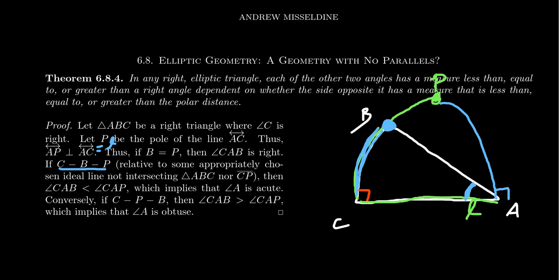The other possibility, of course, is if things were reversed. If P was between C and B in some relative sense. Then you'd have something larger than a polar distance. And you'd get something larger than a right angle. And so this result follows from that.